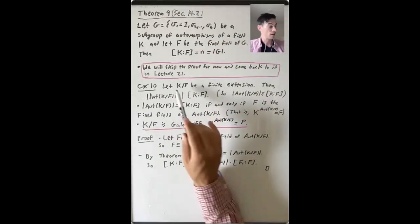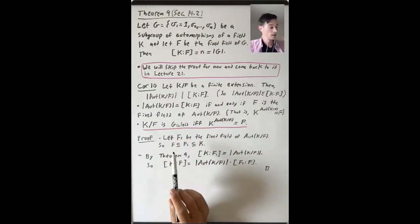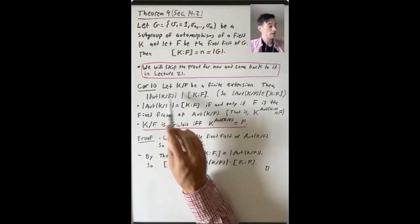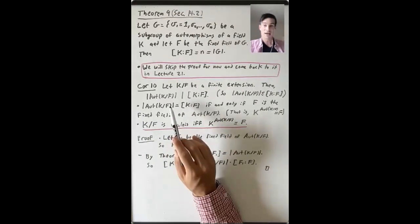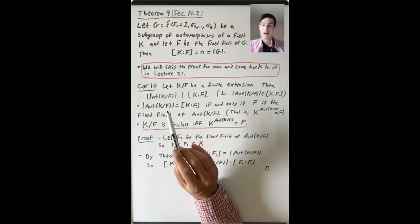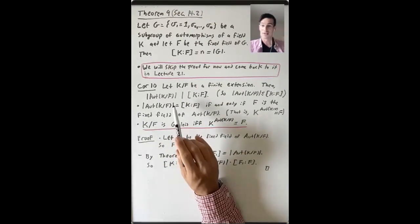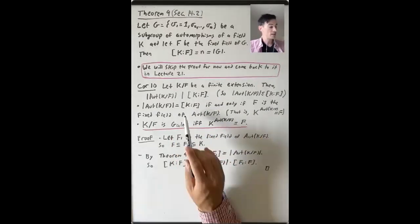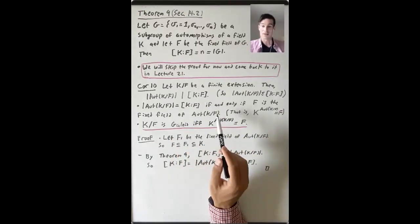Here K over F is any finite extension. You may ask when does equality hold? We'll show that equality holds — that the order of the group of automorphisms of K fixing F equals the degree of K over F — if and only if F is the fixed field of this group of automorphisms, denoted Aut(K/F) equals F.